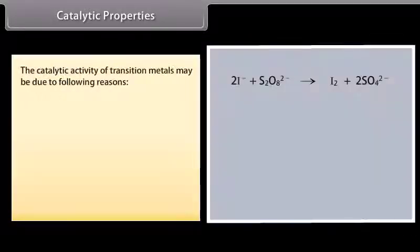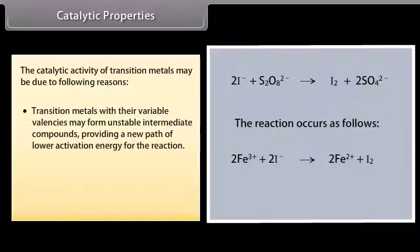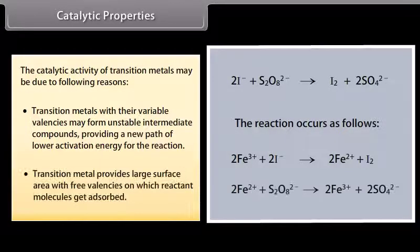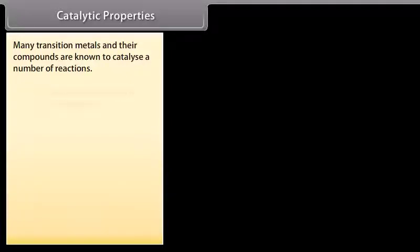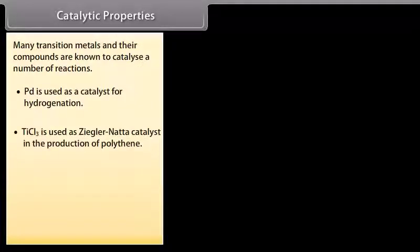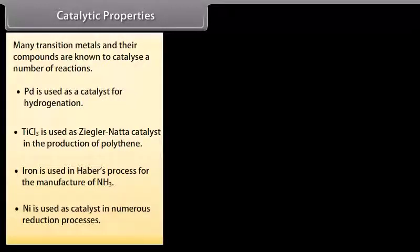The catalytic activity of transition metals may be due to the following reasons: transition metals with variable valences may form unstable intermediate compounds, providing a new path of lower activation energy. For example, iron catalyzes the reaction between iodide and persulfate ions. Transition metals also provide a large surface area with free valences on which reactant molecules get adsorbed, increasing concentration and weakening bonds. Examples include palladium as a catalyst for hydrogenation, titanium trichloride as Ziegler-Natta catalyst in polythene production, iron in Haber's process for ammonia, and nickel in numerous reduction processes.